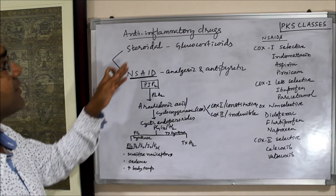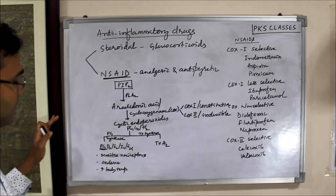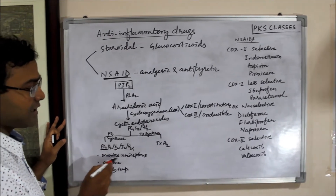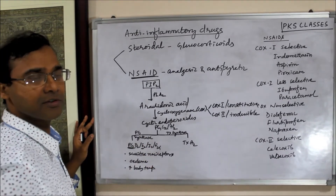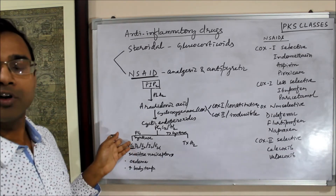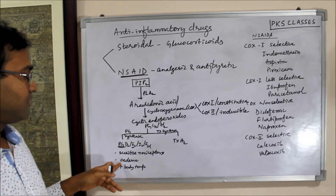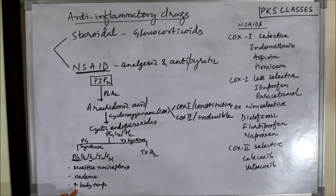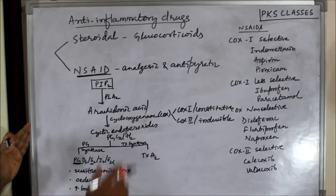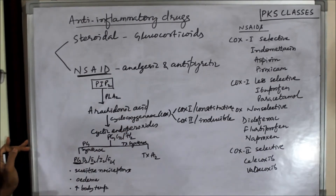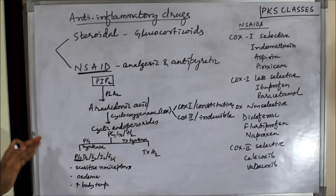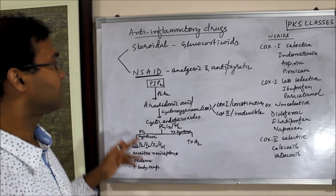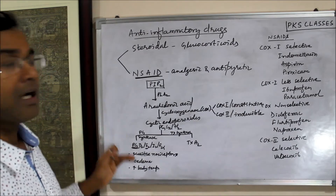Mainly, as far as inflammation, pain, and body temperature are concerned, prostaglandins — mainly D2 and E2 — they sensitize the pain receptors (nociceptors). They produce inflammatory mediators and cause edema, accumulation of fluid, swelling, and inflammation. They also increase the body temperature by stimulating the temperature regulatory center. So these prostaglandins simultaneously produce three things: algesia (pain), inflammation, and hyperpyrexia.